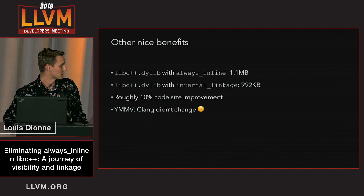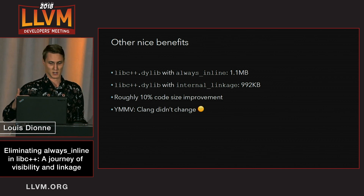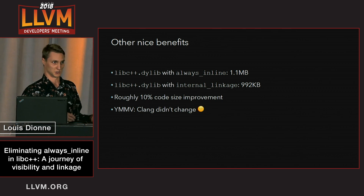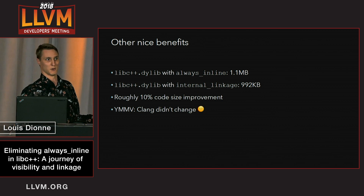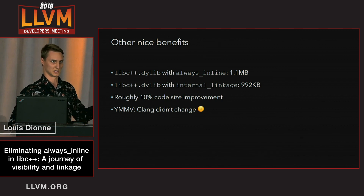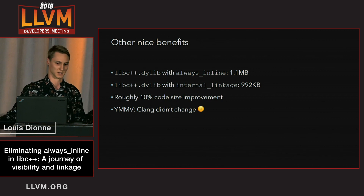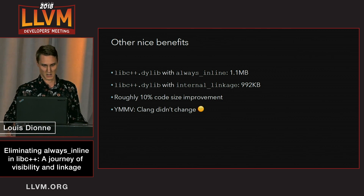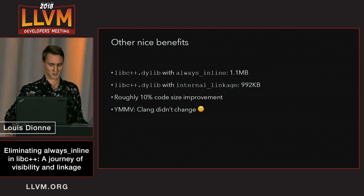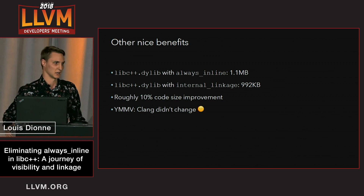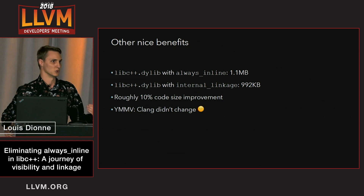There are other nice benefits. Doing this is basically equivalent to outlining inside the translation unit, because instead of always inlining the function at the point of call, you only have one definition in the translation unit and other users refer to that one unless the compiler decides to inline it itself. There's roughly a 10% code size improvement by doing that change for libc++ — just the shared library itself — though it depends highly on how much you use the standard library.